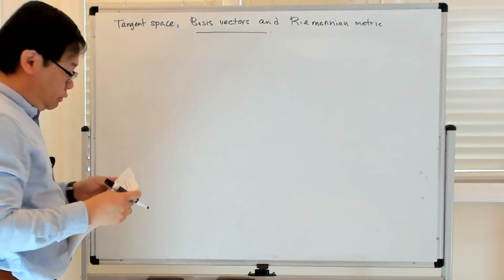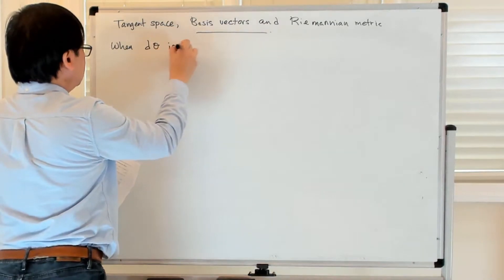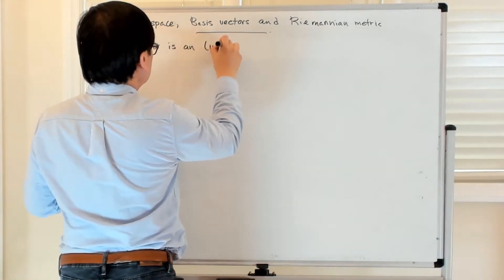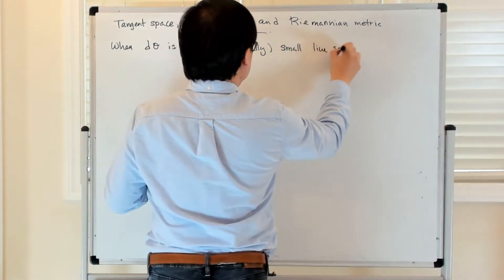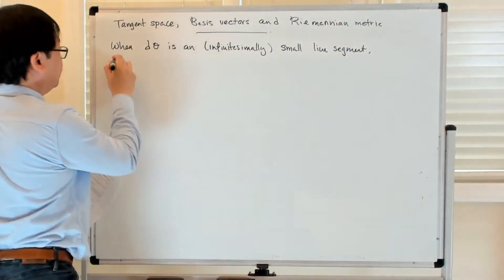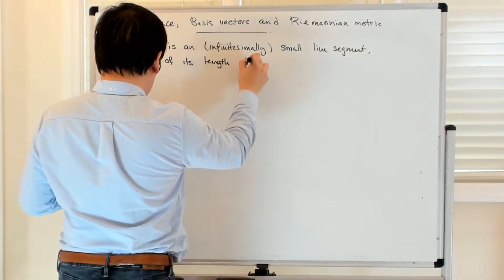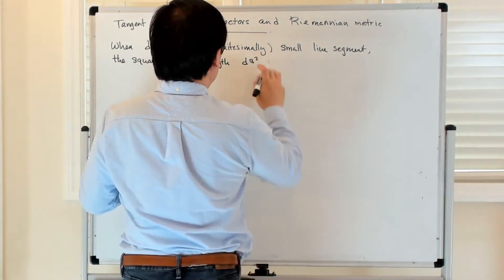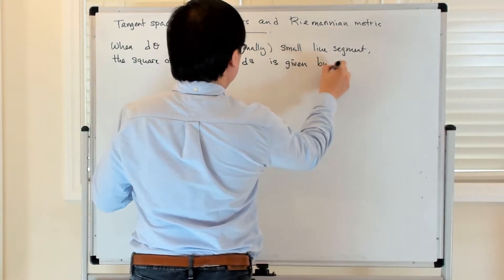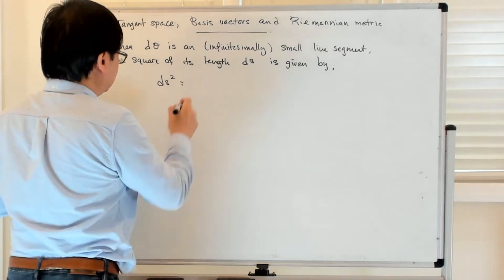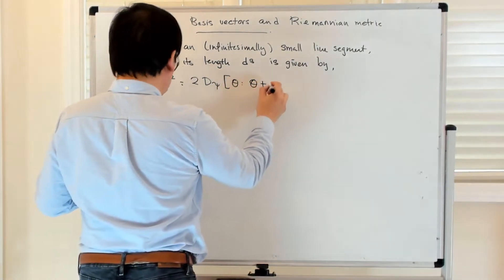Let's start with the idea of an infinitesimal line segment. When dθ is an infinitesimally small line segment, the square of its length ds² is defined to be two times the Bregman divergence of a point θ and a nearby point θ plus dθ.